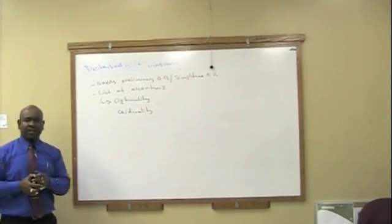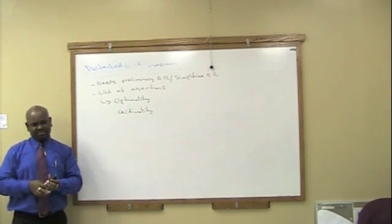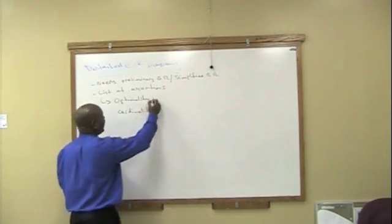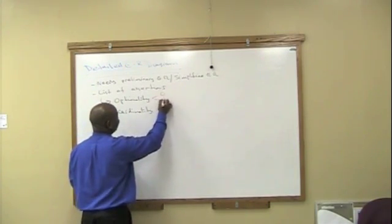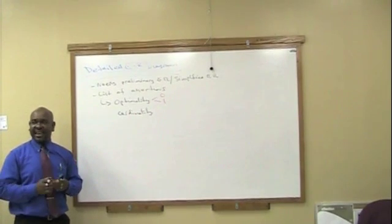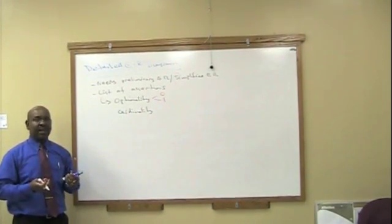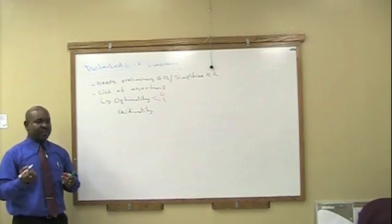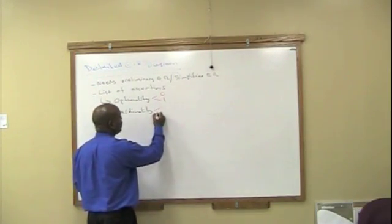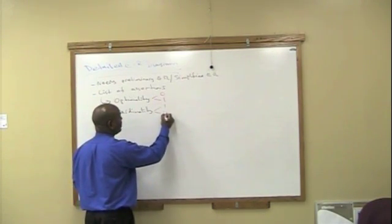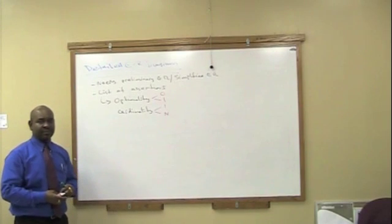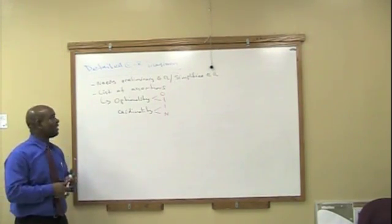And what did we say optionality was? Can and must represented by zero and one. And cardinality is a number. And it represents the number of instances or occurrences of the entity in the relationship. And that has two values being one representing one, and N representing many or at least one. So, these two things become very important.